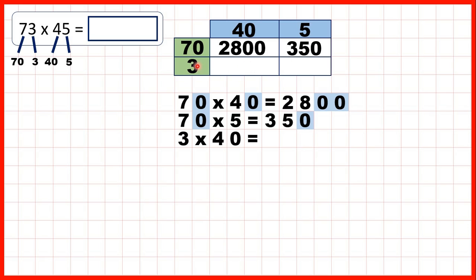Here, we need 3 times 40. So that's 120, because 3 times 4 is 12. And again, we need 1 end zero. And here, we have 3 times 5, which is 15.